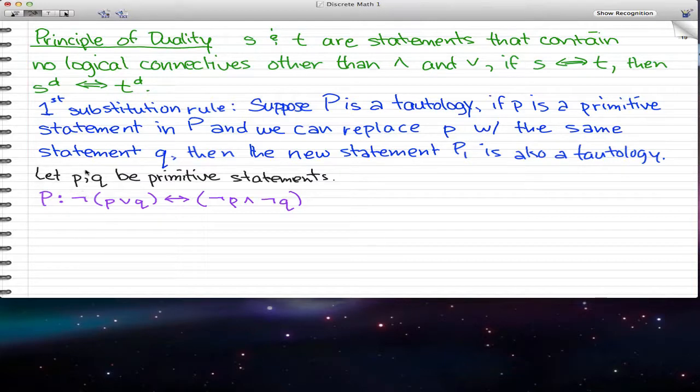So here's the example. Let p and q be primitive statements. Now this big P is our tautology, and we know this because what this is, it's DeMorgan's Law. And I distinctly remembered that I told you guys to memorize the laws of logic in my last videos or one of my past videos. And here we're going back to this. So this is DeMorgan's Law, this compound statement, which is also a tautology. Now when we're talking about the substitution rule, what really happens is we're just replacing one of these variables by some other variables.